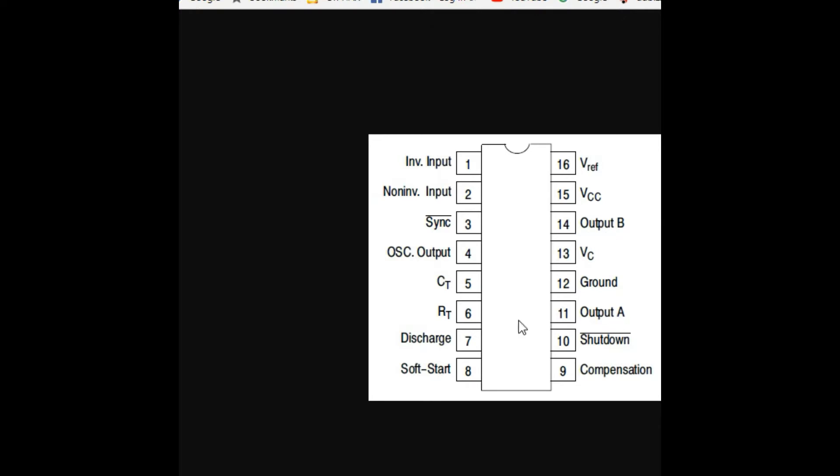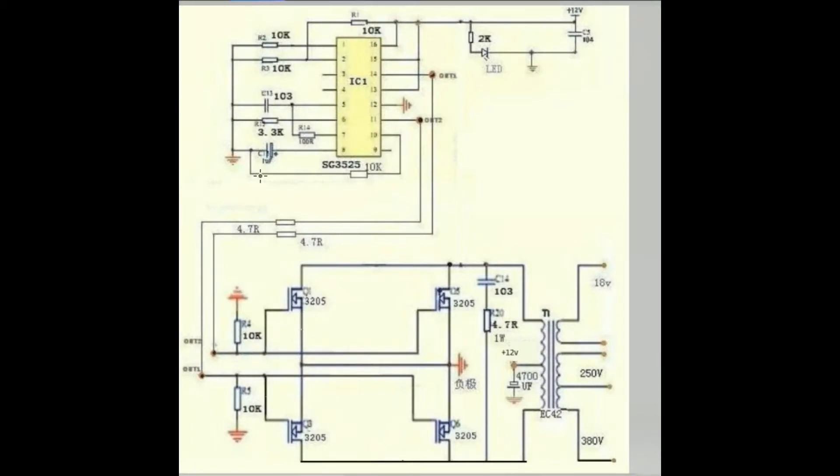So pin number 11 and 14 are the output pins. However, pin number 10 is the shutdown pin. We can add functions to the schematic about automatic shutdown. We see we have used pin number 10 with the 10 kilo ohm resistor just to keep it turned on. And we see pin number 14 and pin number 11 are the output pins. These outputs with 4.7 ohm resistors which are the gate resistors are feeding to the IR3205 MOSFETs.